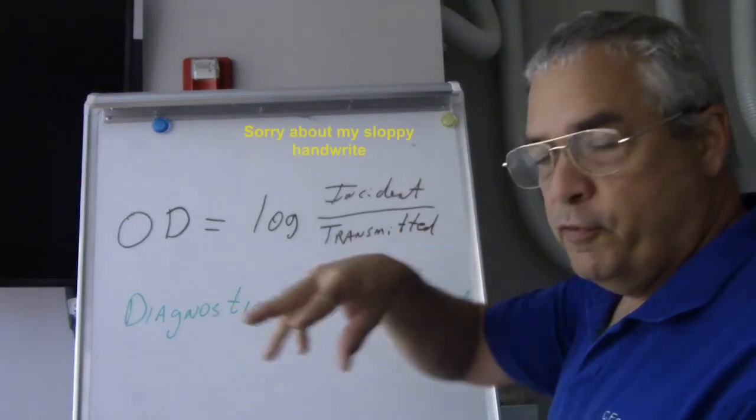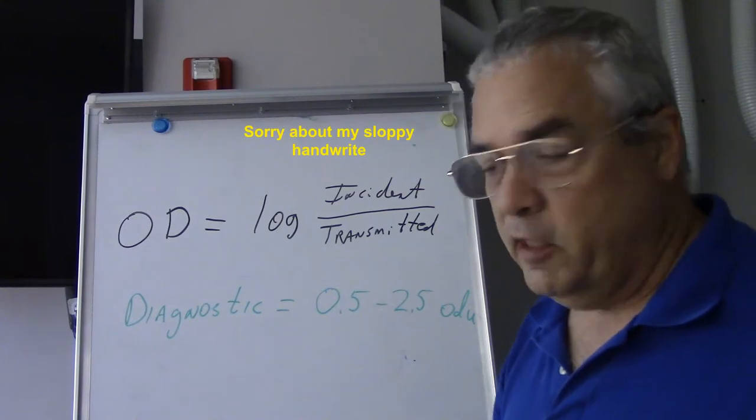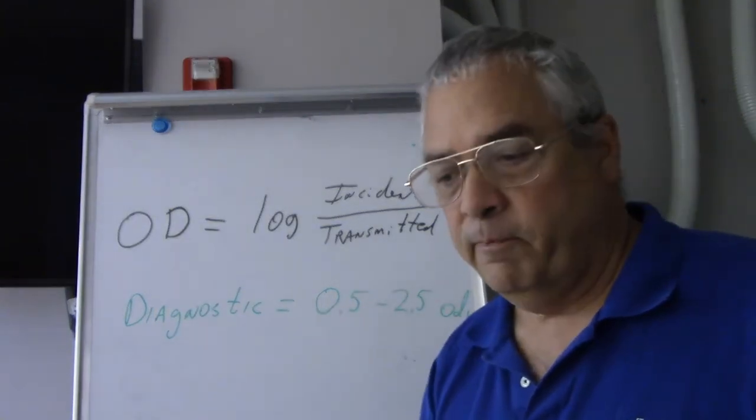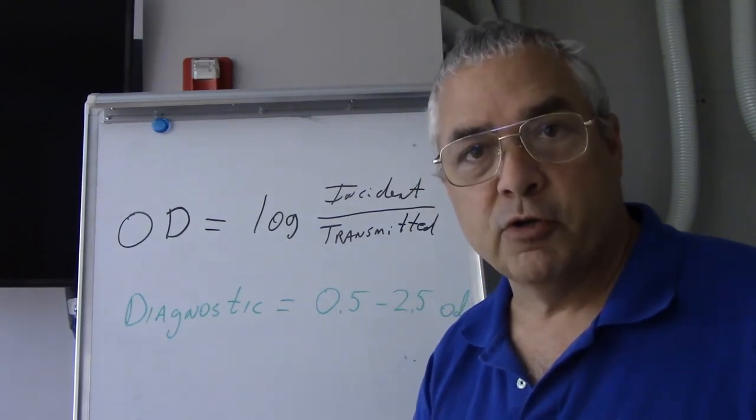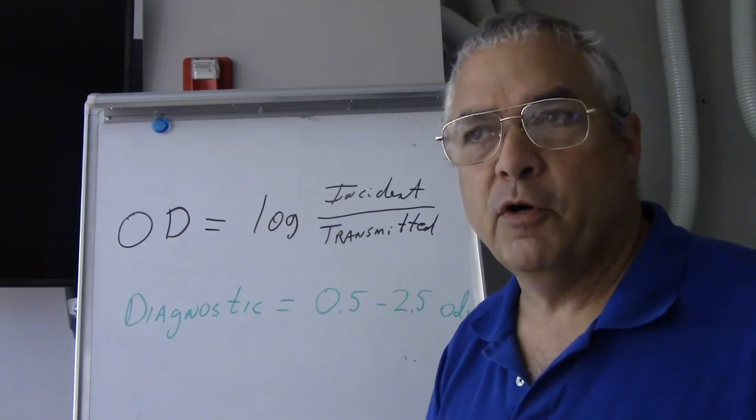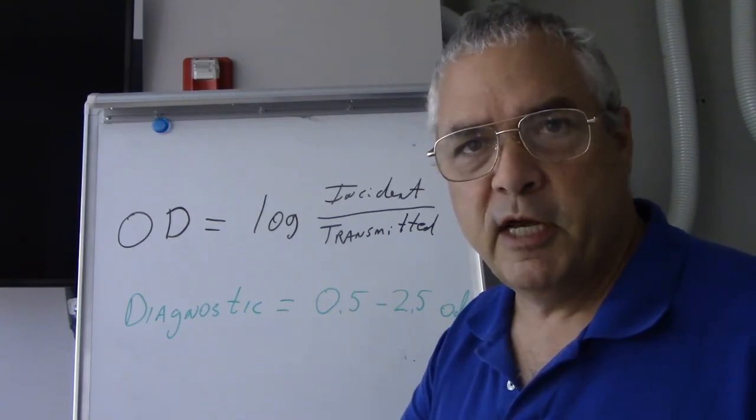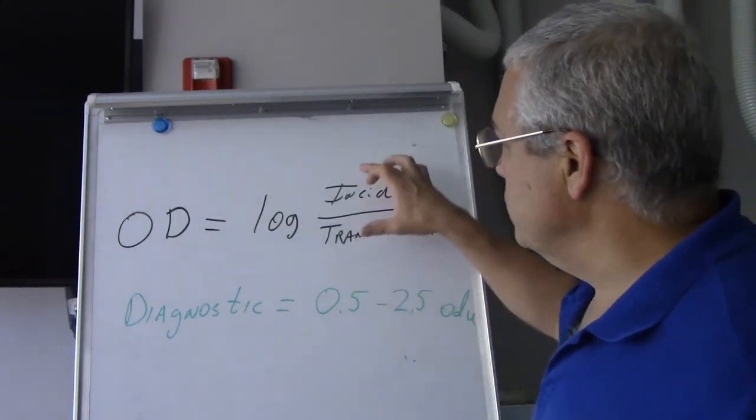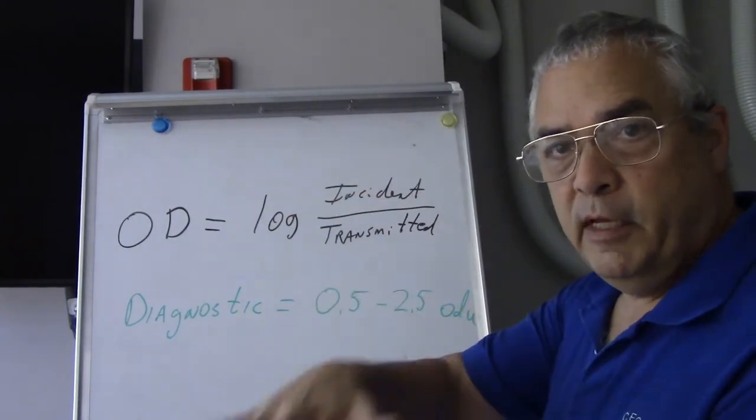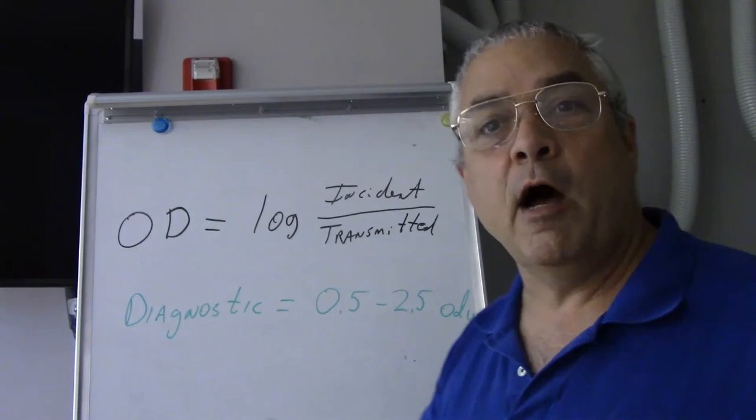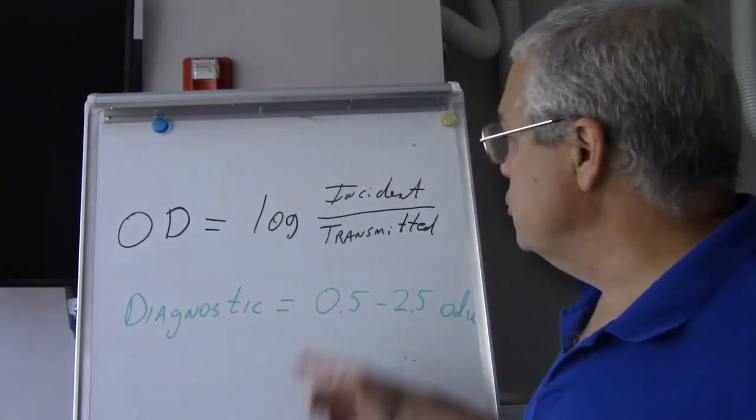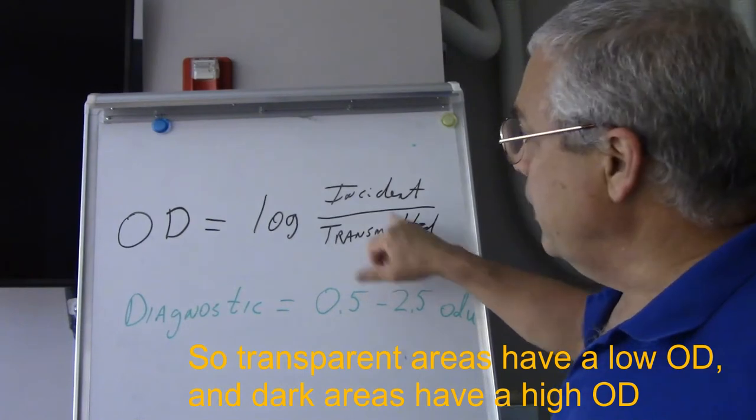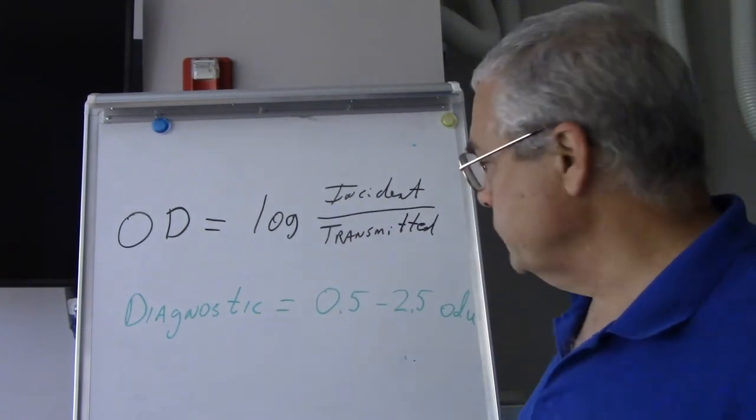The way we measure optical density is we're going to take the amount of light that we shown through the image, which is always going to have a value of 100 because we're starting out with 100% of our available light. Then our little optical device, kind of like a photometer, is going to measure how much light actually came through on the other side. Our equation: we're going to take our incident light, divide it by the percent that actually transmitted through to the other side, and then we're going to extract the log base 10 of that number.